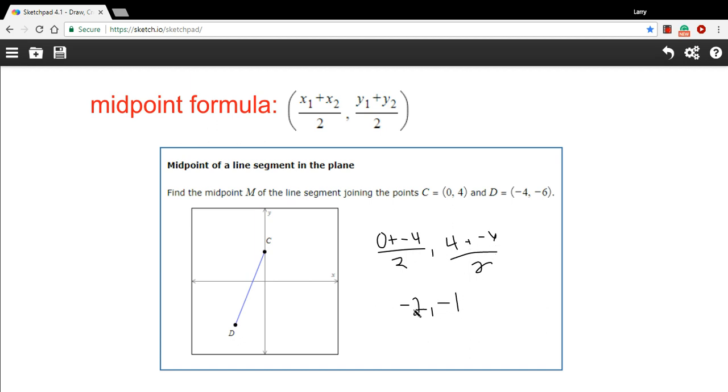So the midpoint here would be negative 2 comma negative 1. Let's just try to plot that. Negative 2, let's see if this is 0, negative 2, negative 1. Yeah, that looks like it would be right about there.